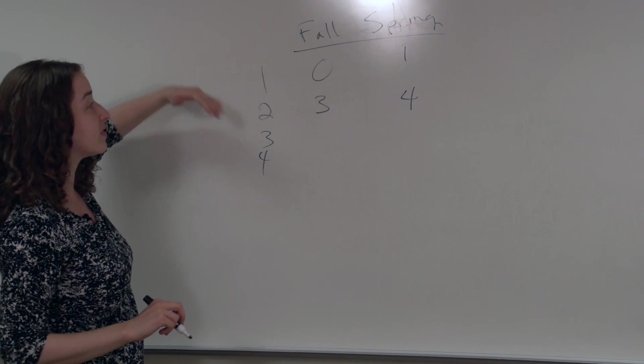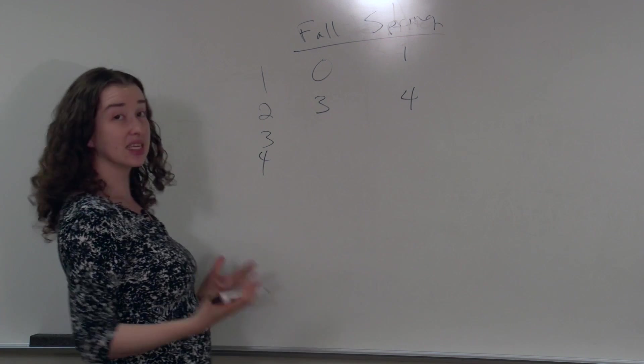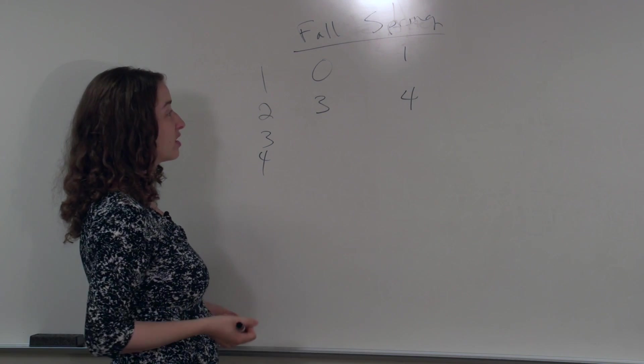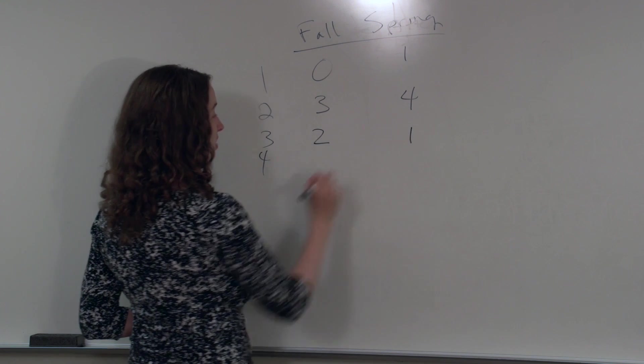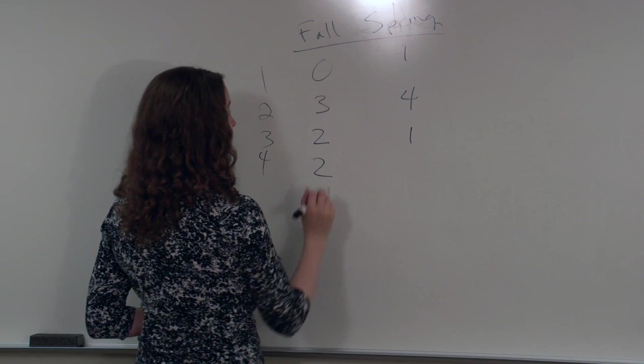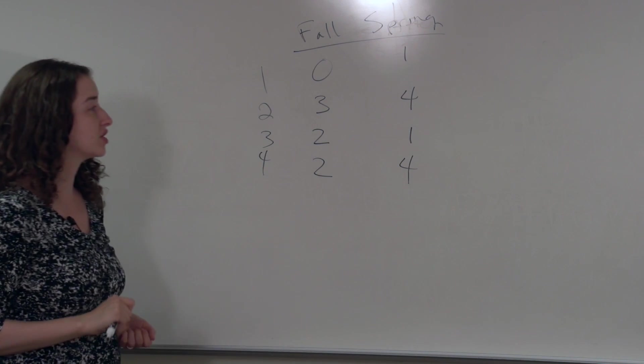You can see that these are two different types of students, and it's important to take into account which student is which. Since we have that information, we may as well use it. Here's a student who got two A's in the fall and one in the spring, and here's a student who got two in the fall and four in the spring.